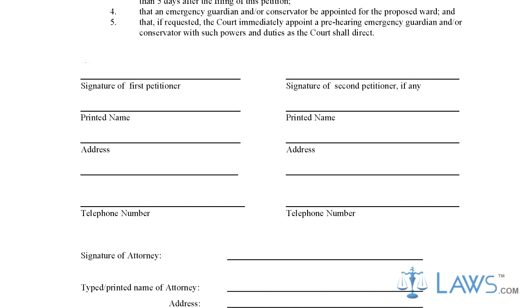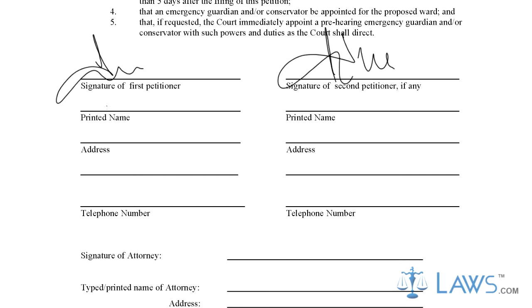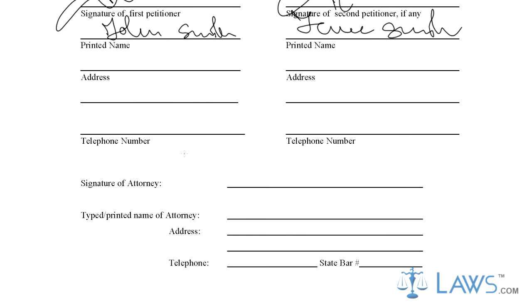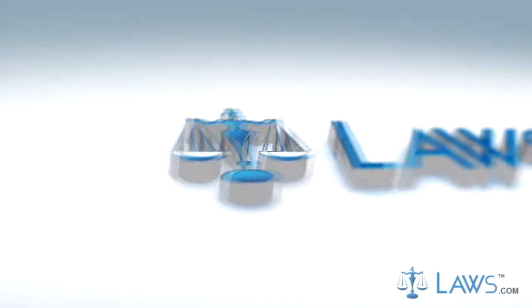Step 8. In the last section, provide all required signatures, printed names, addresses, telephone numbers, and information for the attorney. If the petitioner is using an attorney, they will provide instructions on additional forms in this packet.